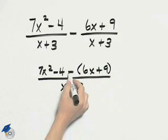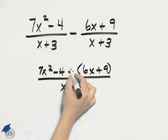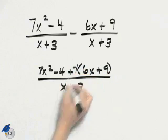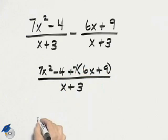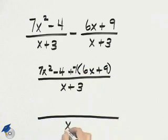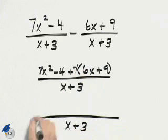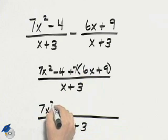And then it's helpful to remember that when you subtract a quantity it's like adding a negative 1 times that quantity. So the next step is going to be to simplify the numerator. We'll do that by distributing through the negative 1.